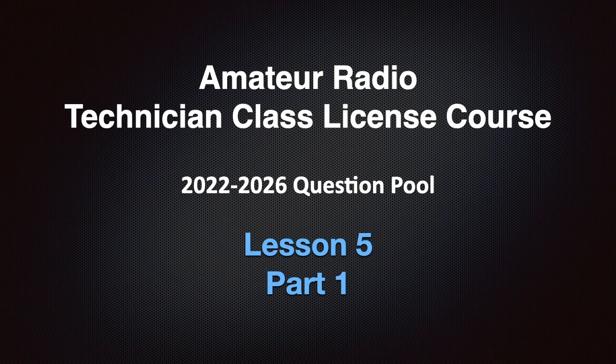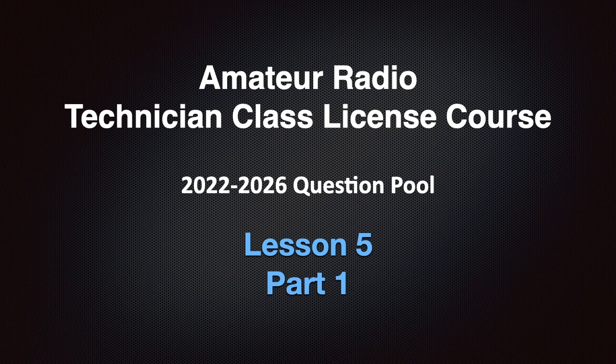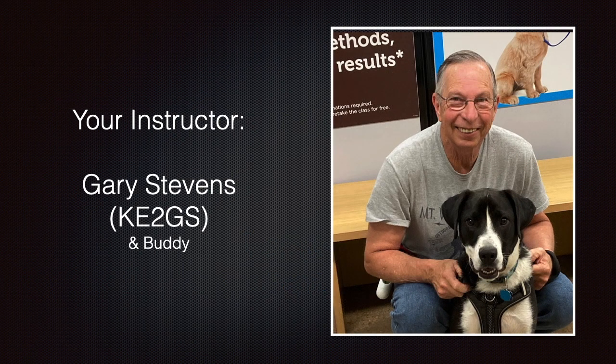This video is Lesson 5, Part 1 of my Amateur Radio Technician Class License course covering the 2022 to 2026 question pool. I'm Gary Stevens, your instructor. I've been an amateur operator since 2001. In 2014, I earned my amateur extra class license, and I've been teaching amateur radio for over 15 years now. My call sign is Kilo Echo 2 Golf Sierra.